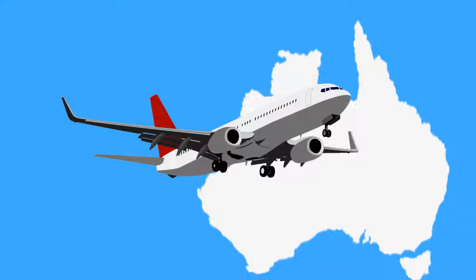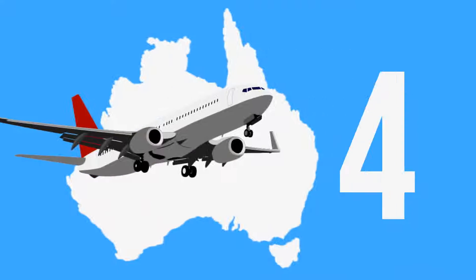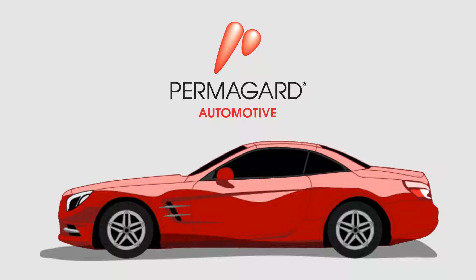Permaguard, an aviation protective coating, has been tried and tested on commercial aircraft in Australia for the past 10 years, and we've now migrated our technology into the automotive sector.